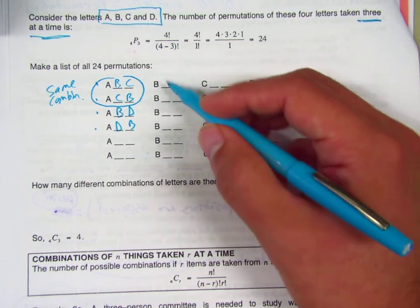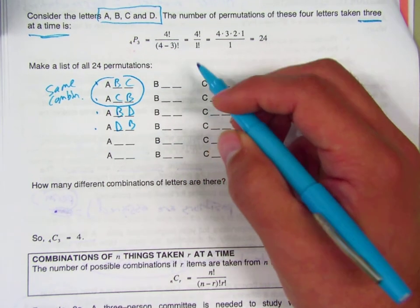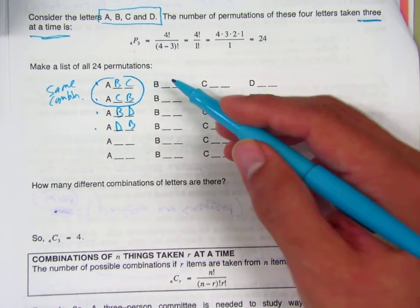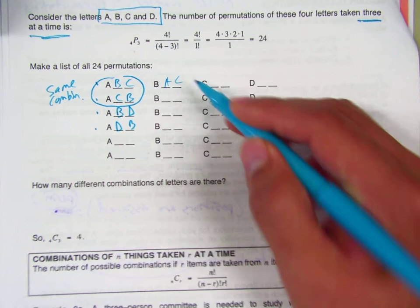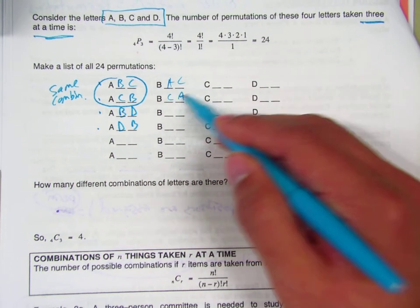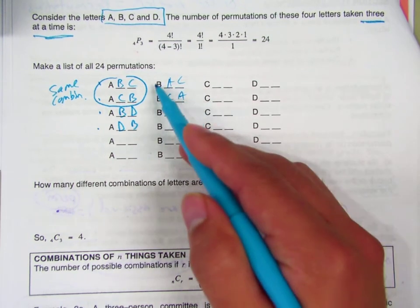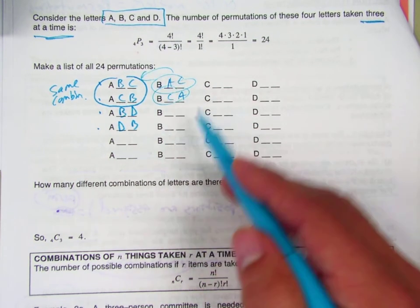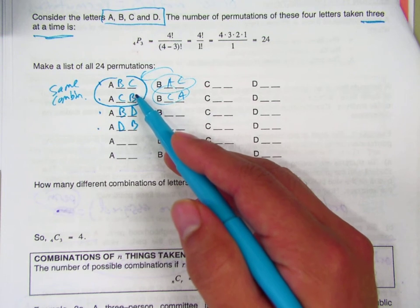And then over here, if I start playing that game, it'll be similar. If I do B, A, C or B, C, A, well, I've already talked about those. These are really the same group as the first group in here. Do you guys see what I'm saying?